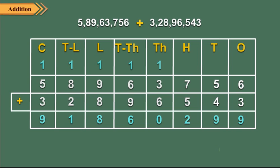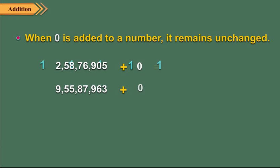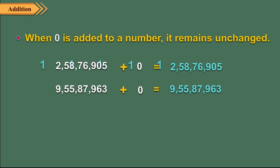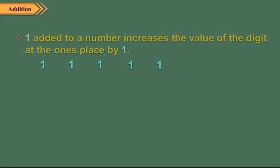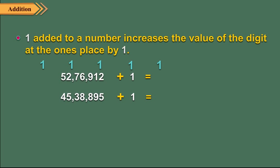Let us now discuss some properties of addition. When 0 is added to a number, it remains unchanged. Let us see some examples. When 1 is added to a number, it increases the value of the digit at the ones place by 1. Let us see some examples.